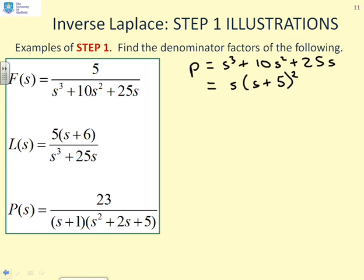What about L? In this case, we've got P equals s cubed plus 25s, which I can take out an s. That leaves me with s squared plus 25. You'll notice this takes the form s squared plus ω squared, which is one of the forms we had in the table for a sinusoid.